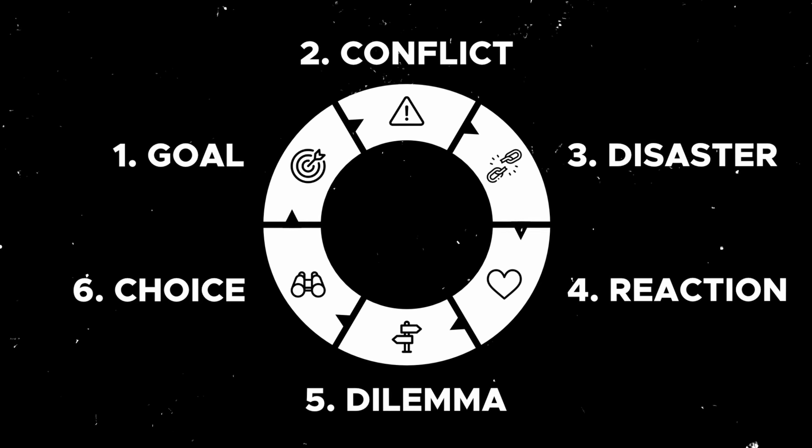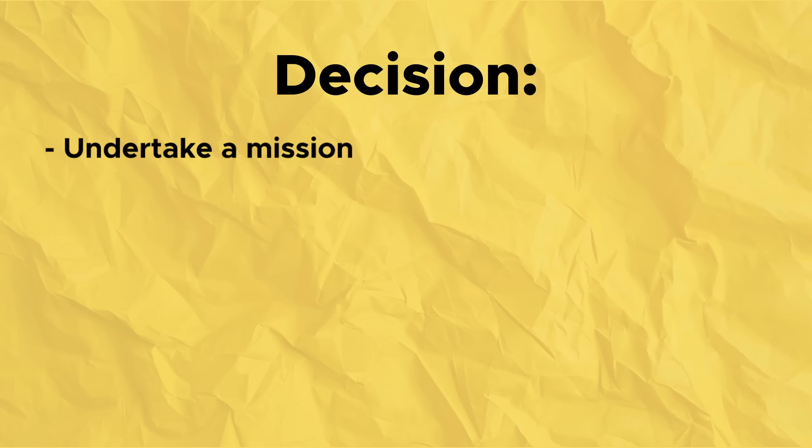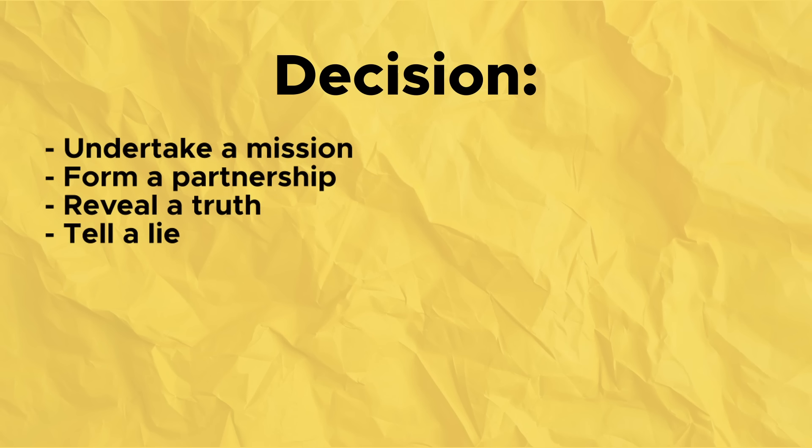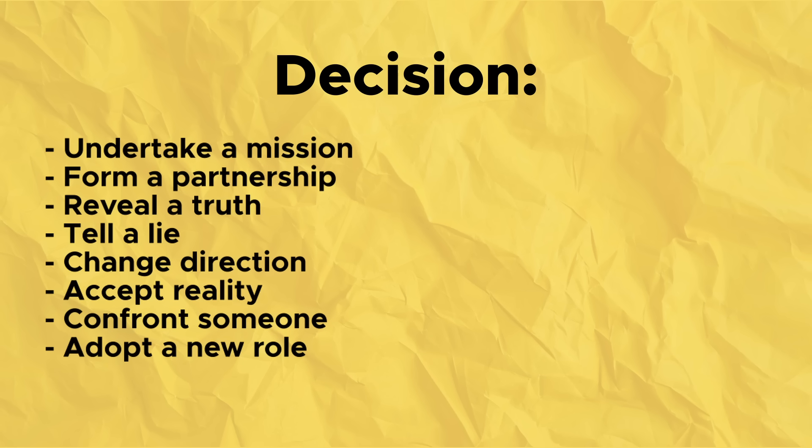This brings us to the sixth and final step: the decision, where your character picks a new goal to pursue. The word 'decide' comes from the Latin 'decidere' — a combination of 'di' meaning 'off' and 'cadere' meaning 'cut.' So to decide literally means to cut off everything but that which is important. When your character makes a decision, they are cutting off part of their identity to assume a new identity or take a new course of action. This process of cutting off through decisions is what creates a sense of a character evolving and changing throughout your narrative. Your character might decide to undertake a mission, form a partnership, reveal a truth, change direction, confront someone, or challenge fate.